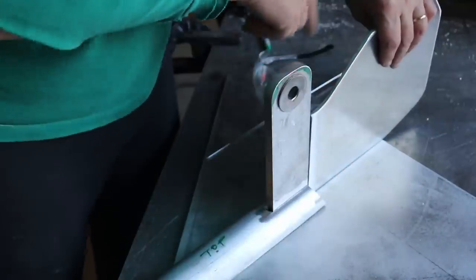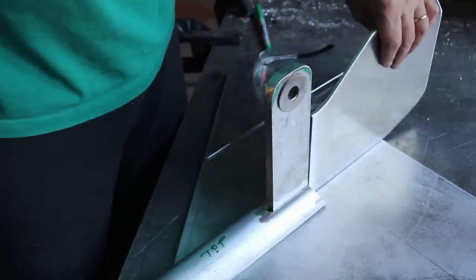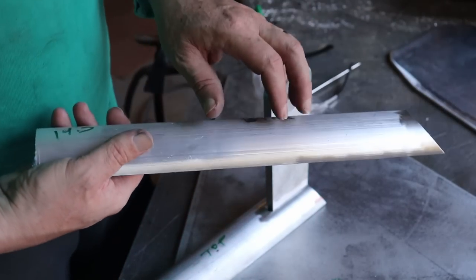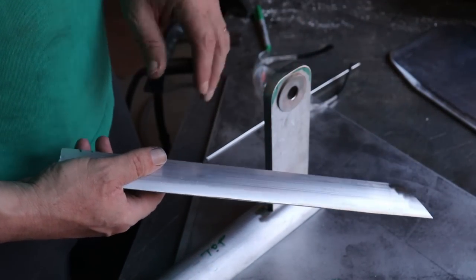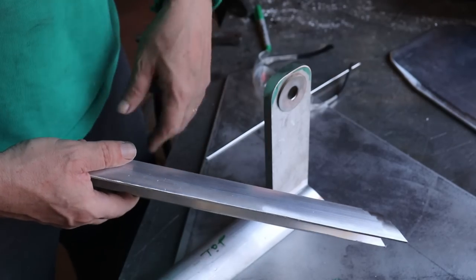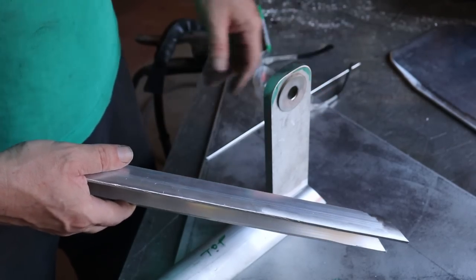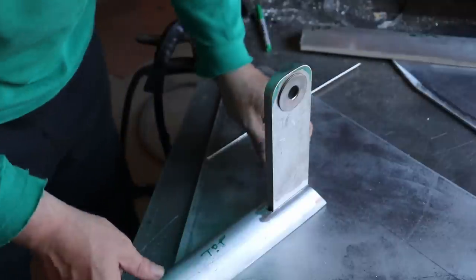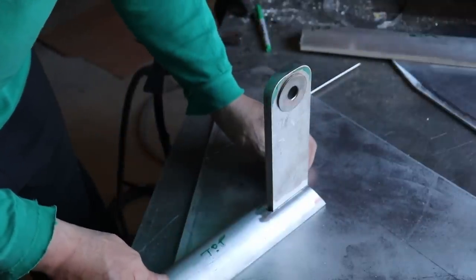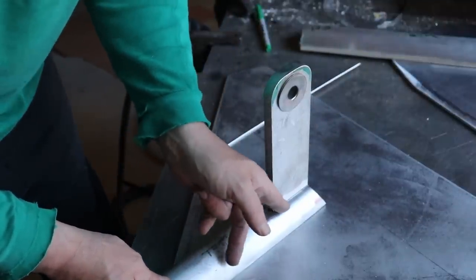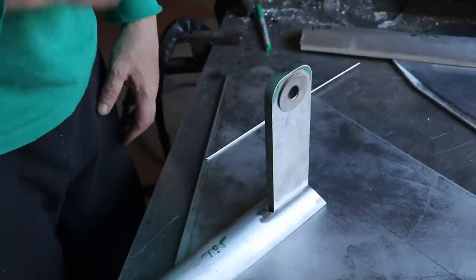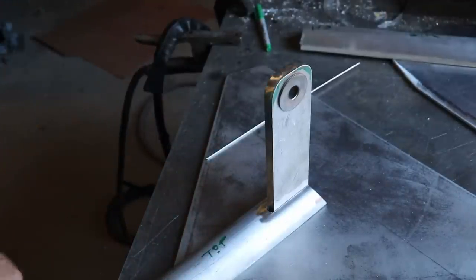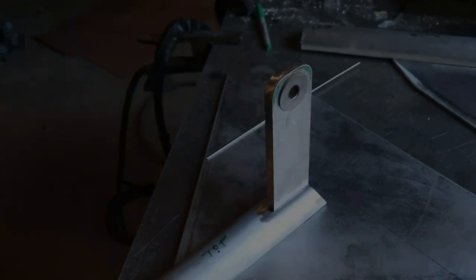Before I weld that in I'll probably get this piece of half pipe positioned and welded on the bottom, just because it'll be a little easier to clamp this to the table without that in the way. Looks like I just need to just take a little bit off the inside of this to get it squared up, and we'll tack it in place and weld it out.